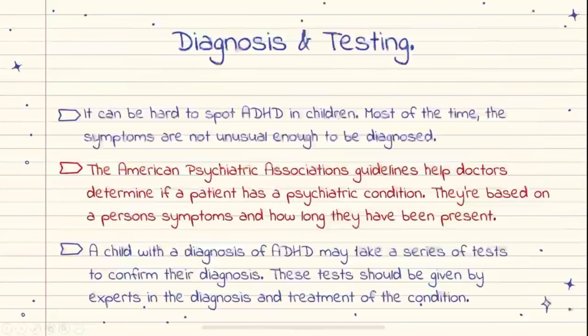Diagnosis and testing of ADHD: it can be hard to spot an ADHD child. Most of the time, the symptoms are not obvious enough to be diagnosed. Deciding if a child has ADHD is a complex process with several steps. There is no single test to diagnose ADHD, and many other problems like anxiety, depression, sleep problems, and certain learning disabilities can have similar symptoms. A child may take a series of steps to confirm their diagnosis. Tests should be given by experts in diagnosis and treatment of children, and it also requires hearing and vision tests to rule out other problems, as well as taking a history of the child from parents, teachers, and the child itself.